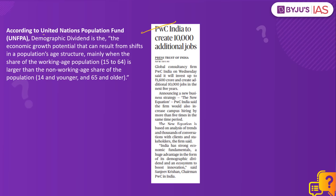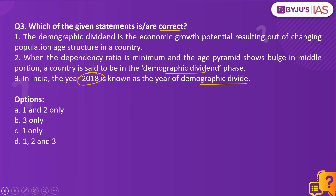As per the United Nations Population Fund, demographic dividend is the economic growth potential that can result from shifts in a population's age structure. This occurs mainly when the working age population — between 15 to 64 years — is larger than the non-working age population, that is those under 14 and those over 65. In simple terms, when the workforce is growing relative to the dependent population, this economic growth potential is known as demographic dividend. So statement number one becomes correct.